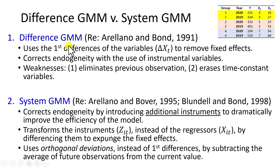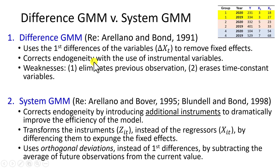Difference GMM, credited to Arellano and Bond 1991, uses first differences of the variables to remove fixed effects, and corrects endogeneity with the use of instrumental variables.